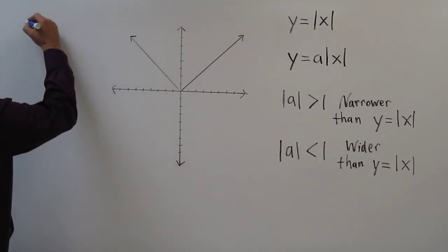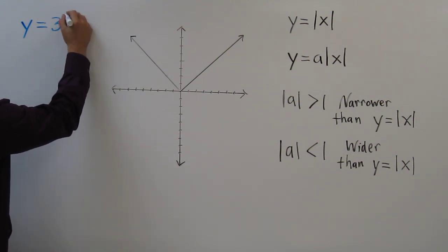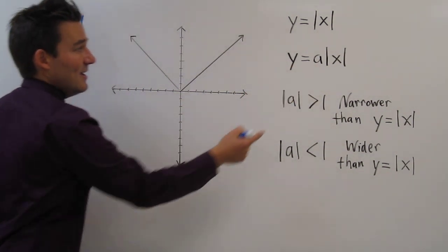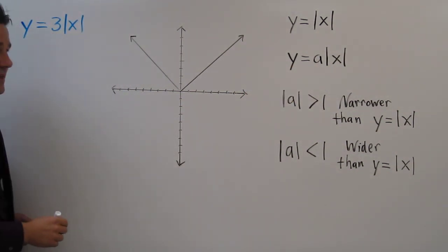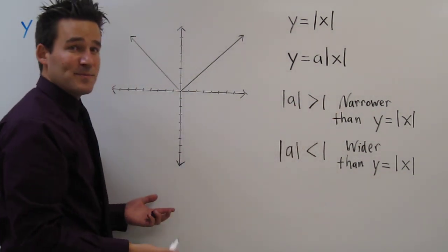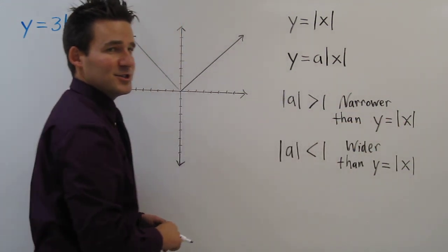Let's start with y equals 3 times the absolute value of x. Now in this case, a is 3. And since 3's absolute value is greater than 1, we expect we're going to have a graph that's narrower than the parent function.